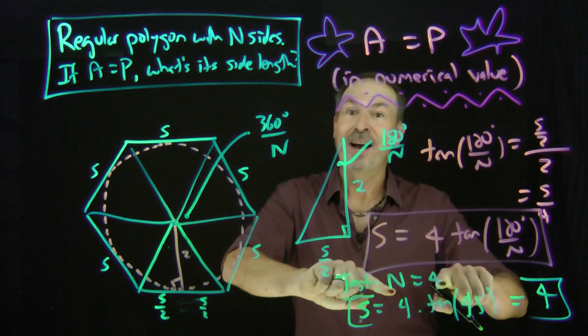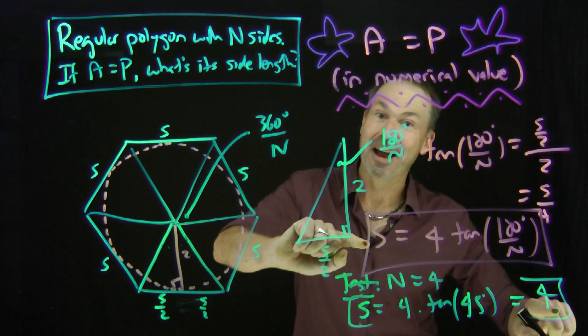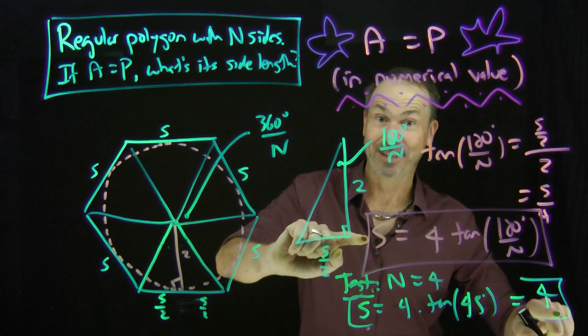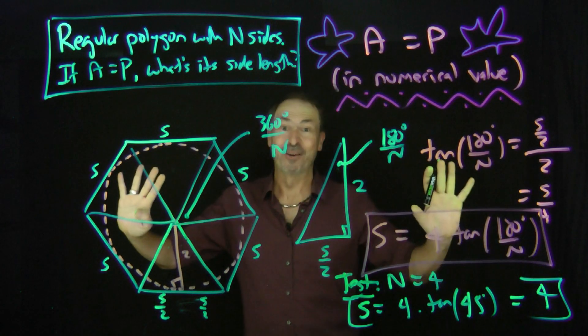Now here's a deep question. Is this the only value of N that gives an integer side length? Is this the only value of N that gives a rational number for the side length? So it's become very deep.